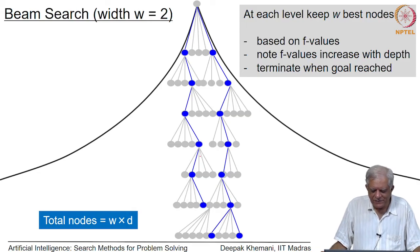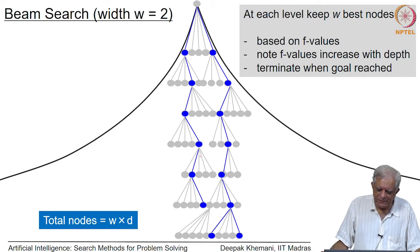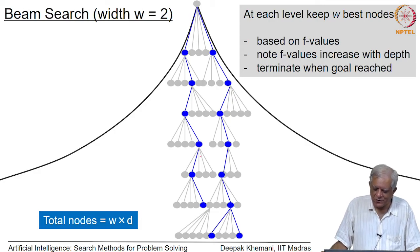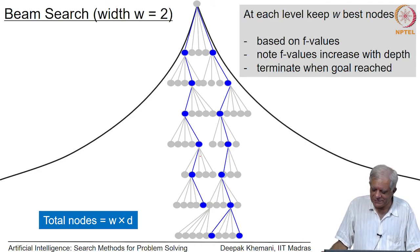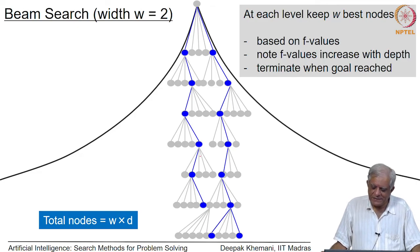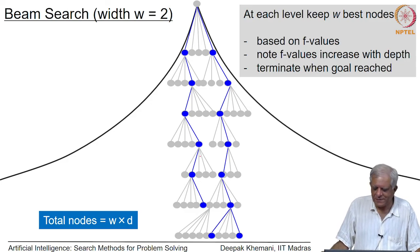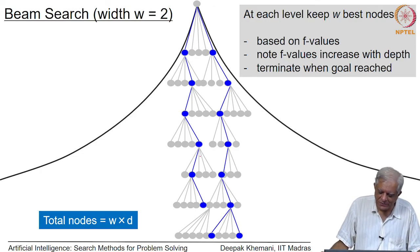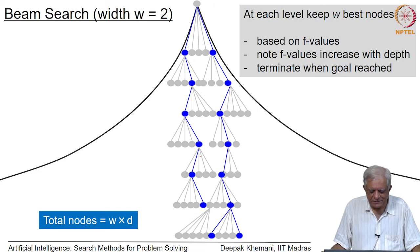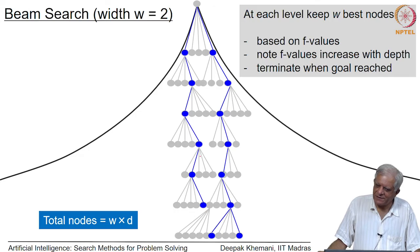This is how beam search looks if the beam width is 2: at every level we keep 2 nodes which are the best nodes, shown in blue. The rest of the nodes shown in grey do not need to be kept and are deleted. We keep only 2 nodes at every level, and the space requirement is width times depth. F values keep increasing and we terminate not when the gradient reaches zero but when we reach the goal state, which we will eventually reach because the g value otherwise keeps increasing too much.